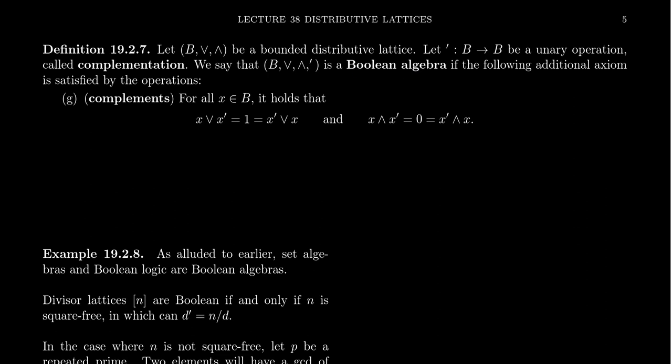Suppose we have a bounded distributive lattice. Distributive means that meet and join distribute across each other. Bounded means that both operations have identities, which we call 0 and 1 — the identity of join is 0, and the identity of meet is 1. We're then going to introduce a new symbol, a little prime notation, which is the complementation map. A Boolean algebra will be a set with three operations: two binary operations and this unary operation called complementation.